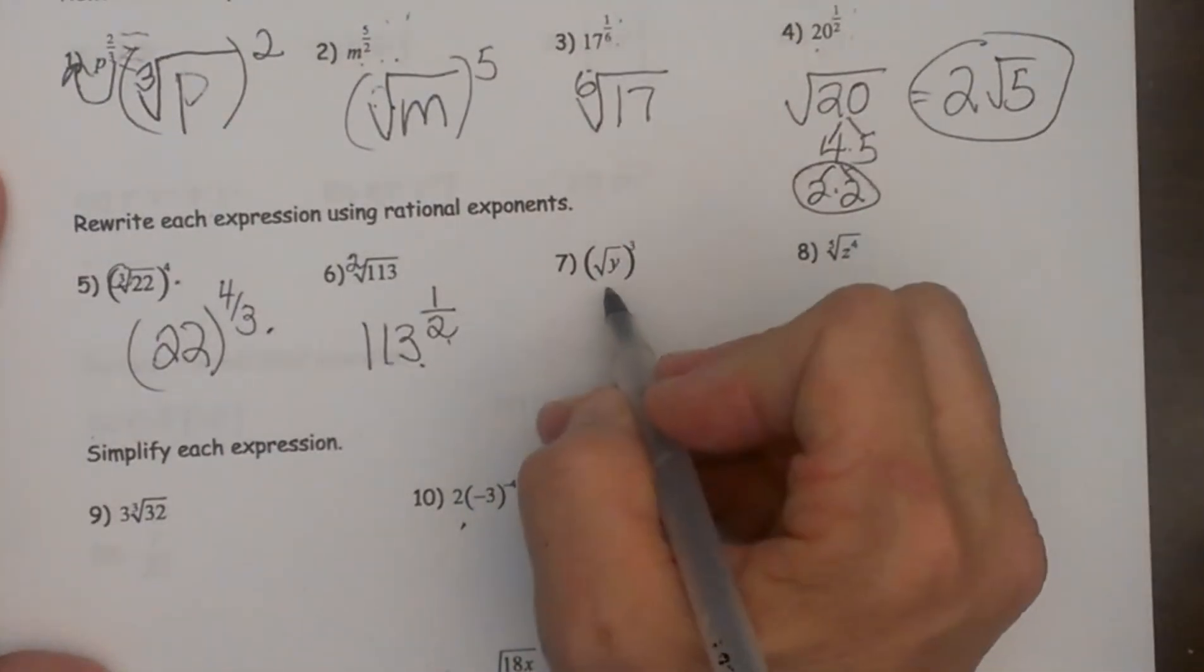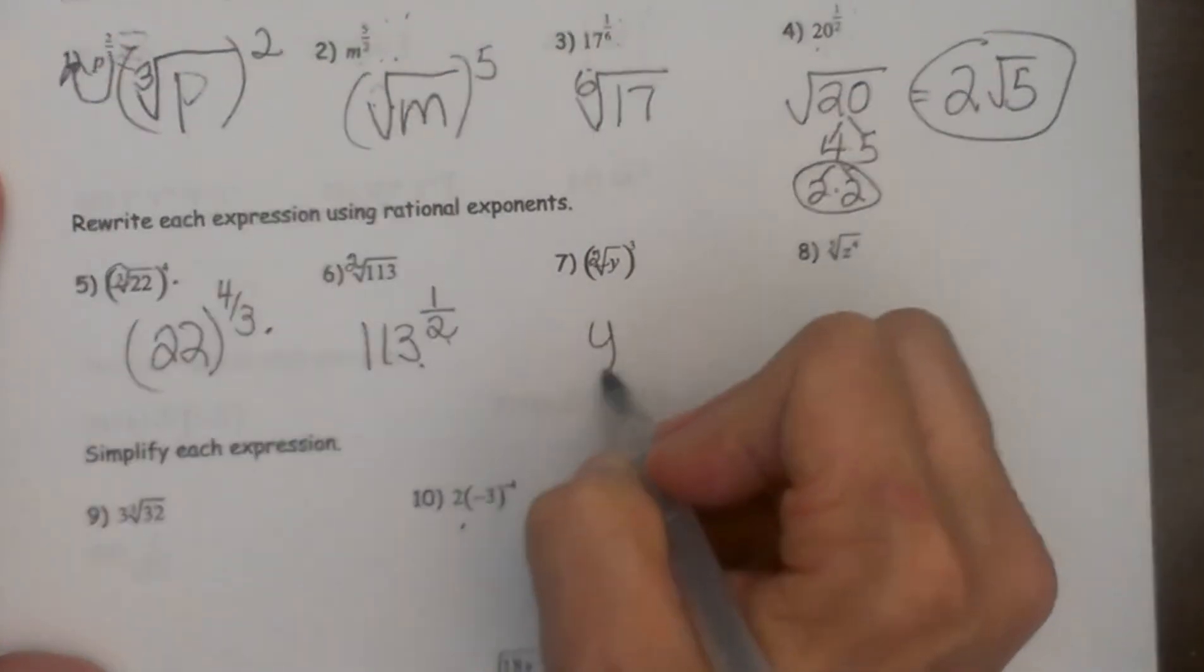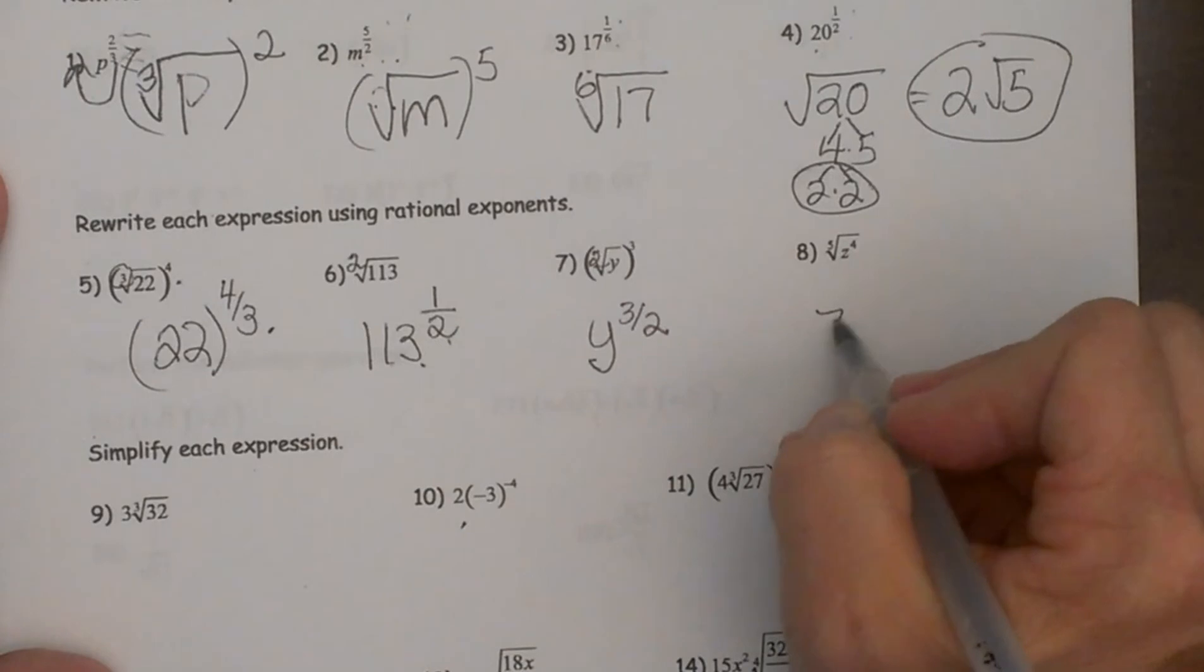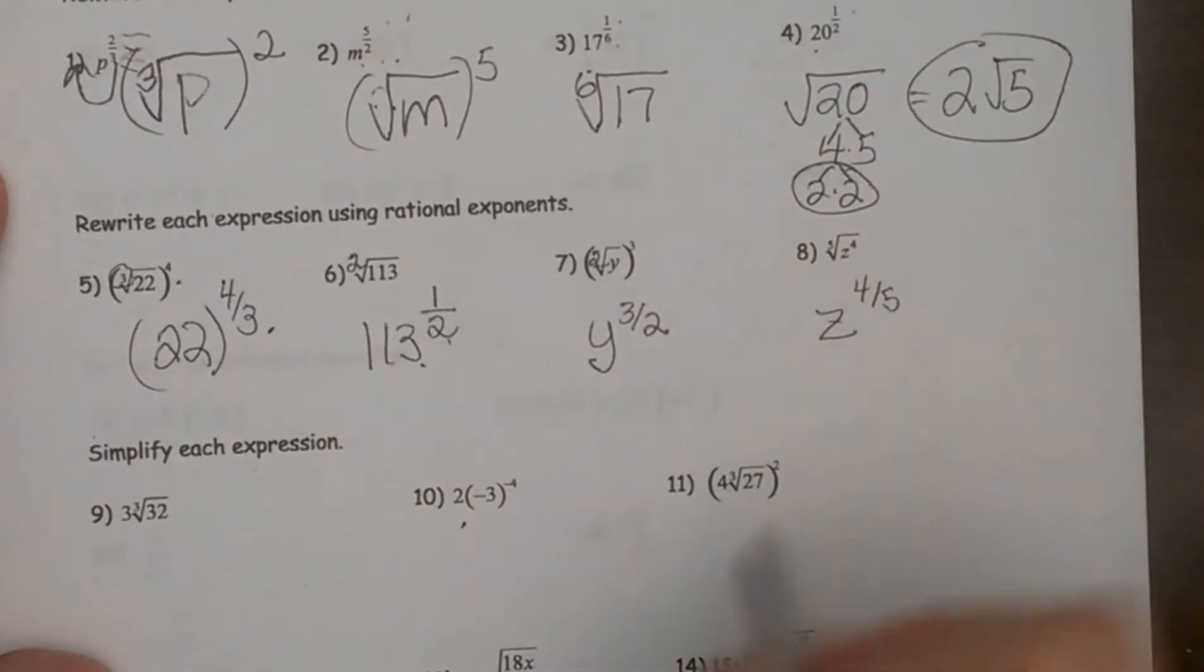So here is another one that does not have a number here. But we now know that there is a two there. So that is going to be y to the three halves and this last one is going to be z to the four fifths. So there you go.